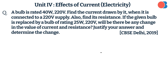A bulb is rated 40 watts, 220 volts. Find the current drawn by it when it is connected to a 220 volt supply. Also find its resistance. If the given bulb is replaced by a bulb of rating 25 watts, 220 volts, will there be any change in the value of current and resistance? Justify your answer and determine the change.